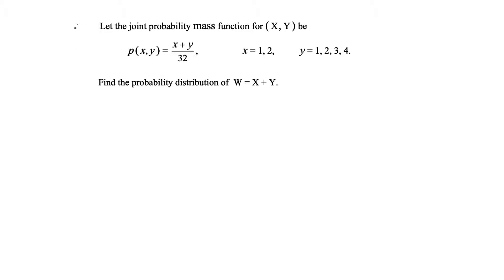In this video I'm going to do a statistics and probability problem. It says: let the joint probability mass function, or joint PMF, for two random variables x and y be the following. The joint PMF of x and y is equal to (x plus y) over 32, with given possible values of x and y. Find the probability distribution of w if w is equal to x plus y.